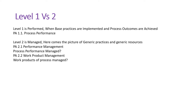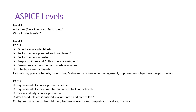Level 2 is called 'managed,' and here it comes into the picture of general practices and general resources. PA 2.1 is talking about performance management — whether all the process performance is managed or not. PA 2.2 is talking about work product management — whether the work products of that particular process are managed or not.